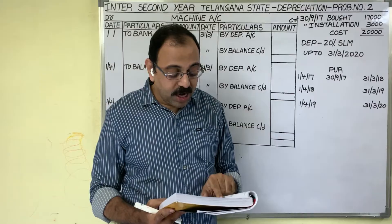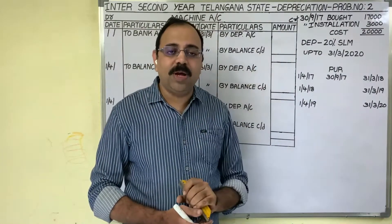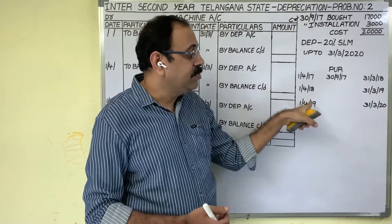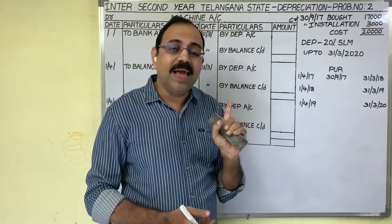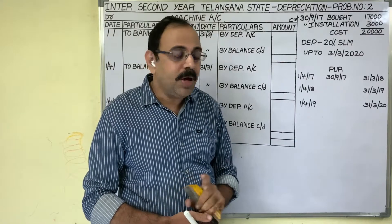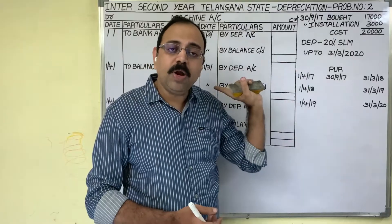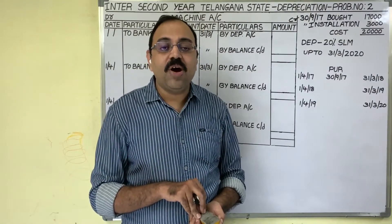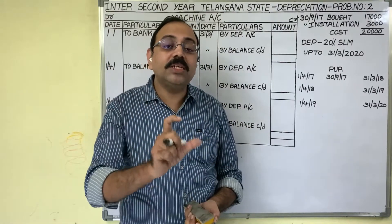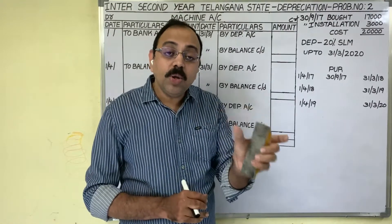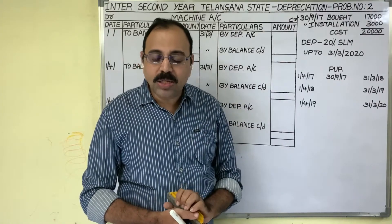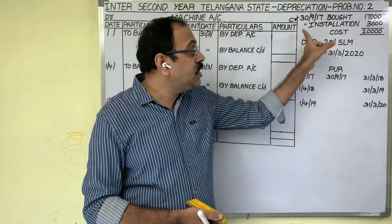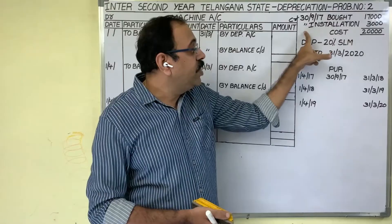We need to prepare the machinery account up to 31st March 2020. Comparing the second problem with the first: in the first problem, scrap value and estimated life of the asset were given, and we used the formula (cost minus scrap value) divided by estimated life to calculate annual depreciation. In the second problem, neither scrap value nor estimated life is given, so we cannot use that formula. Also, the first problem had no installation charges, but the second problem does.